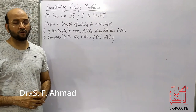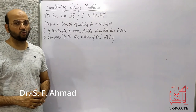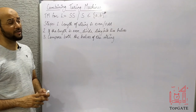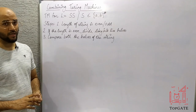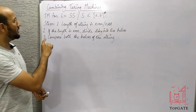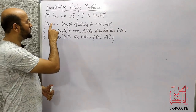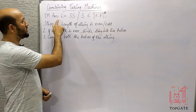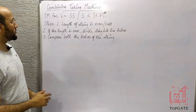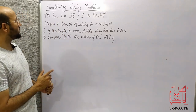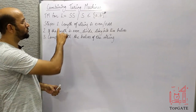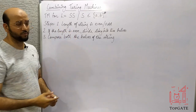Hello students, welcome to the channel TopGate. Today we are going to discuss one topic of Turing machine — that is combining Turing machines. In this combining of Turing machines, we will try to design a Turing machine for the language L equal to SS.